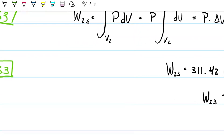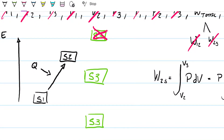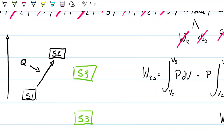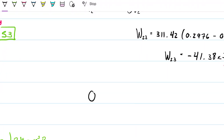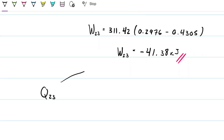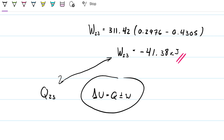We're going from state 2 to 3 and decreasing, so we're either staying low or going further down. We're missing Q as we go from 2 to 3. To find Q, we use the first law: if I know the work and can calculate ΔU using the CV relationship, I can relate these three concepts to find the heat.